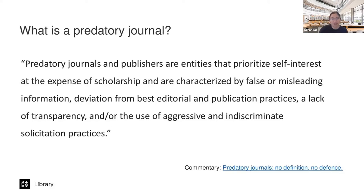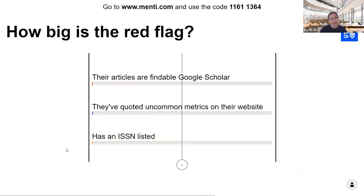Rather than going through tips one by one, let's do a thought exercise to unpick some indicators and red flags for predatory journals. Say a journal has invited you to publish with them. Consider these characteristics — use sliders to indicate how big a red flag each one is: slide to 10 if you think 'danger, run!' or keep it low at zero or one if the characteristic actually sounds above board. You can go to menti.com and use code 11611364 to respond.